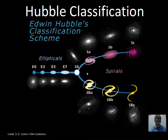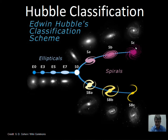Hubble came up with a classification scheme called the Tuning Fork diagram, where he put them in a sequence. You can see examples here — photographs of E0 through E7, and then the spirals: SA with small spiral arms, SC with wider spiral arms, and SB for barred spirals, where the bar goes through the nucleus. Again, the A-type has spiral arms close to the nucleus; the B has a smaller nucleus in comparison to the arms; and the C has the smallest nucleus of all.